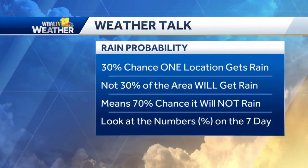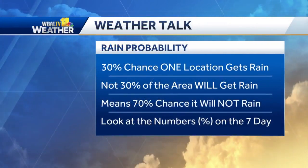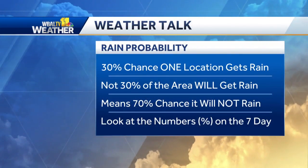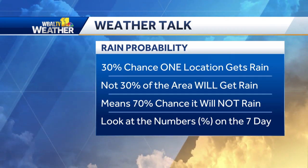We need a magnifying glass to see those numbers — can you show us what you're even talking about? Yes, I will show you, but first I'm going to give you an example of what I mean. We're talking about the percentage chance of precipitation, and I'm going to use a 30% chance for rain as an example.